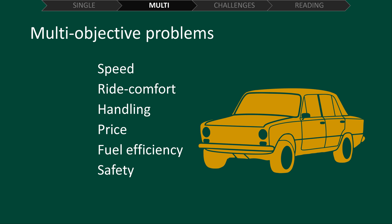This is where we can see that the majority of real world problems are actually multi-objective problems. A multi-objective problem is simply a problem which has multiple objectives. Using the earlier example, we may want to optimize the design of a vehicle with the following objectives: Speed, Ride comfort, Handling, Price, Fuel efficiency, and Safety.